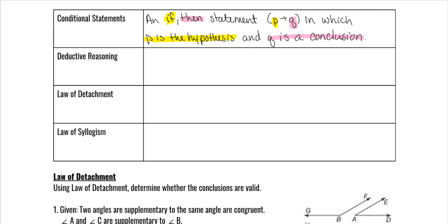You will learn more about what that means as we get further into it. Deductive reasoning uses facts, rules, definitions, or properties to reach a conclusion.